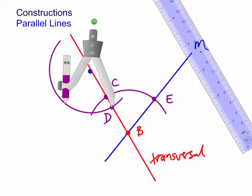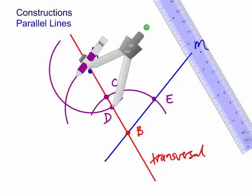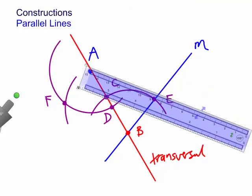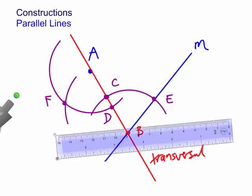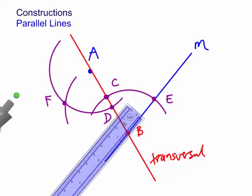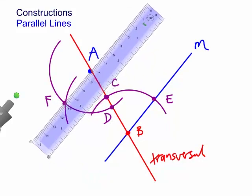Flip the compass over. We now need to draw a little arc — here's the little arc. That new point, let's call it F. Now, line A through F should be parallel to line M. Let's get the ruler and draw a line now through A and F. And you can see that is actually parallel to line M.